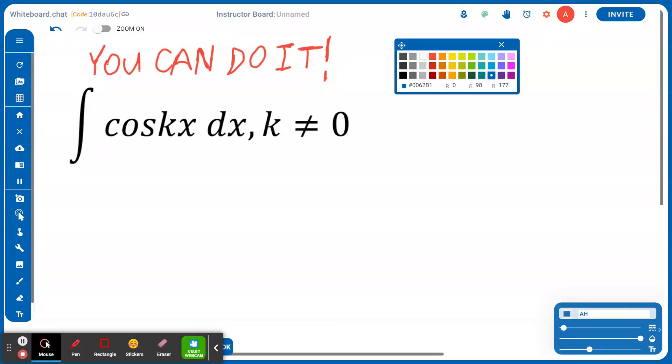Hi, everyone. Let's take a look at the following example. Find the antiderivative of cos(kx) with respect to x, where k ≠ 0.